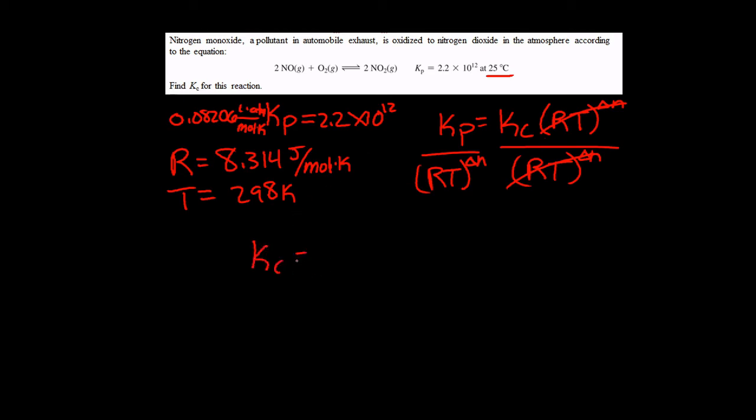Kc. And then also delta n. So if we look at our reaction here, we start with 3 moles of gas as reactants. And we end with 2 moles of gas. So delta n is going to be negative 1. Because it's going to be 2 minus 3.